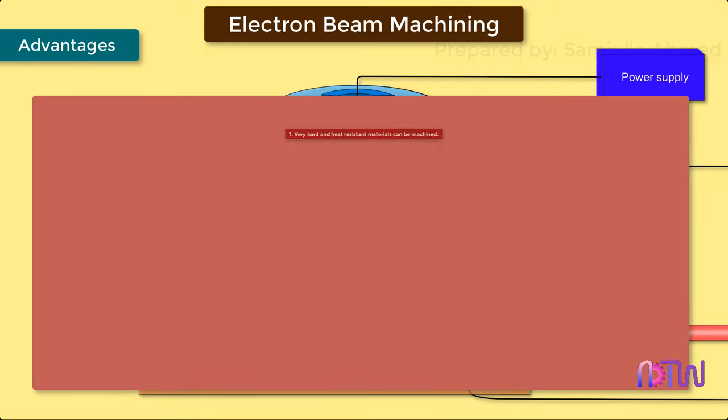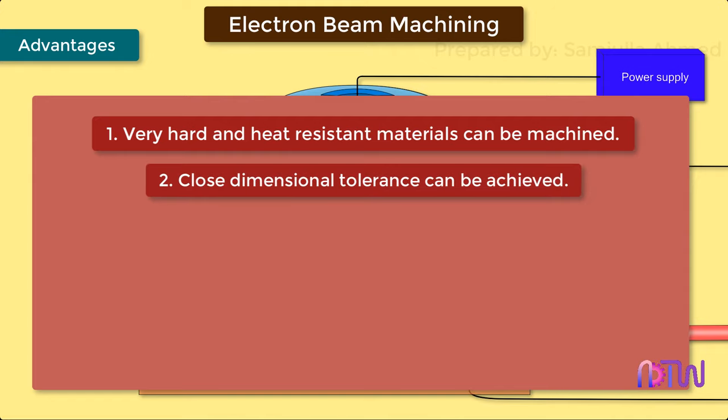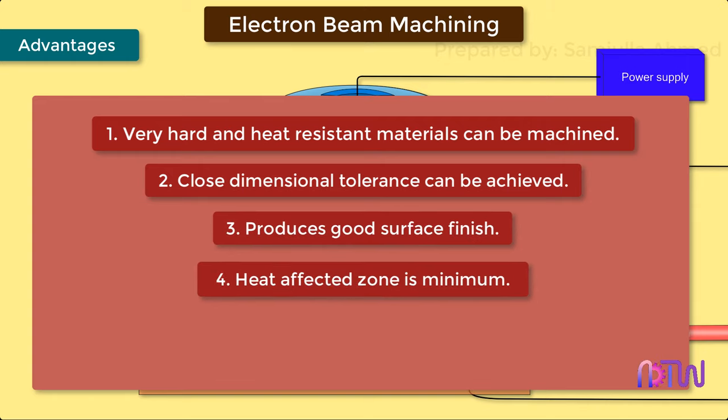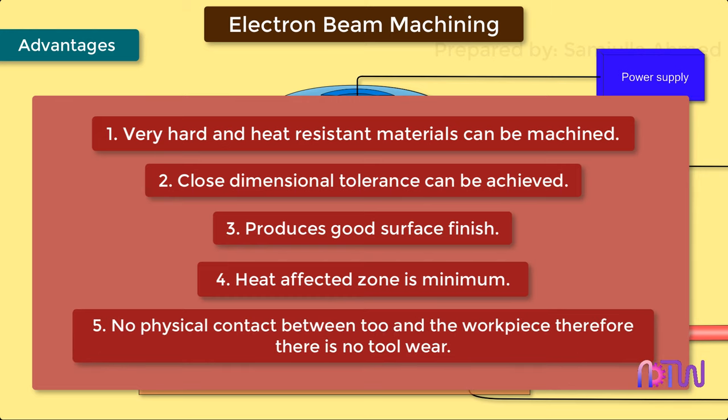Advantages of EBM: 1. Very hard and heat-resistant materials can be machined. 2. Close dimensional tolerance can be achieved. 3. Produces good surface finish. 4. Heat affected zone is minimum. 5. No physical contact between tool and the workpiece, therefore, there is no tool wear.